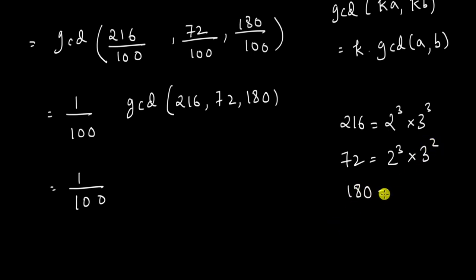And 180 is 18 × 10. 10 is 2 × 5 and 18 is 2 × 9. So another 2 and 9 is 3².